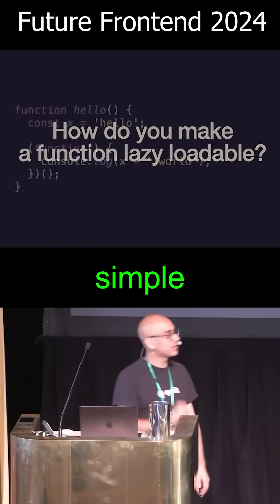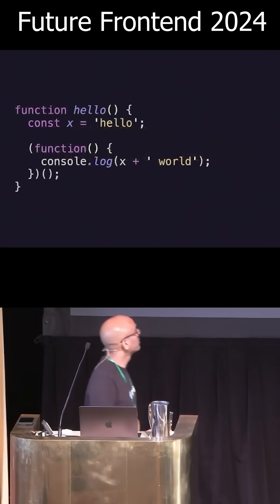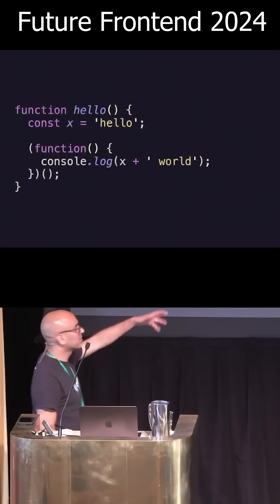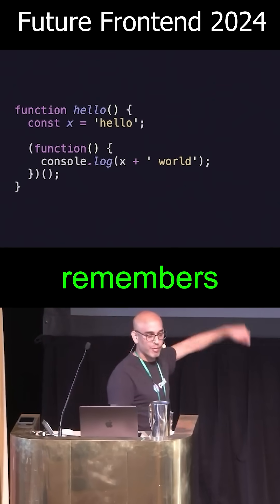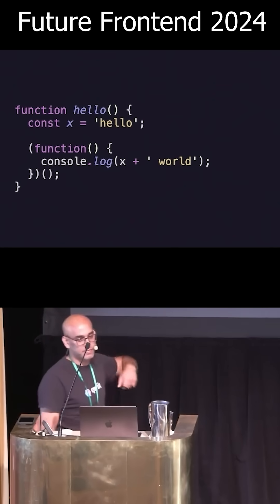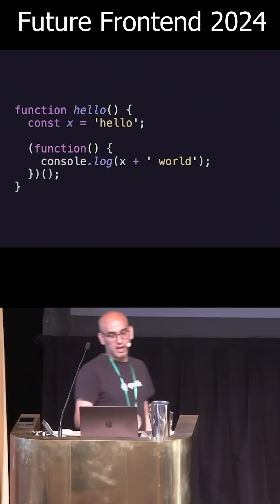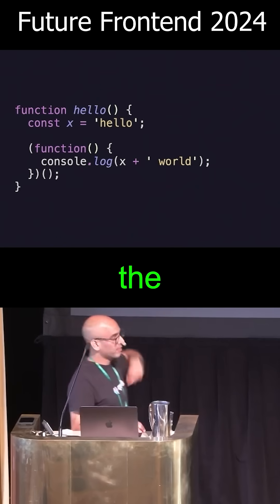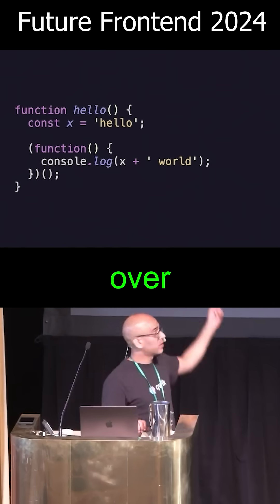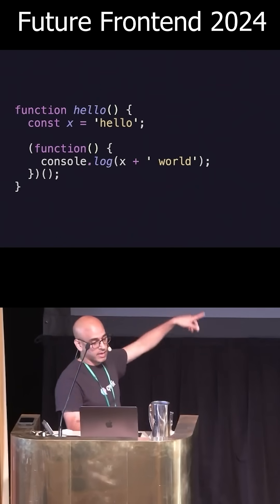Let's have a look at a simple example. We have this very simple function. There's a little iffy in it — if anybody remembers what an iffy is. And we have a constant there. We have the function that closes over the scope of x.